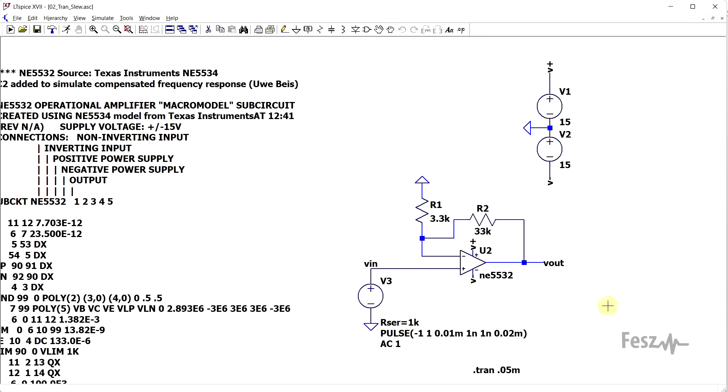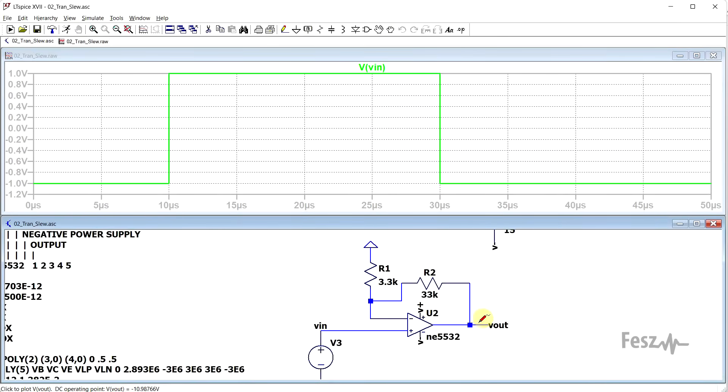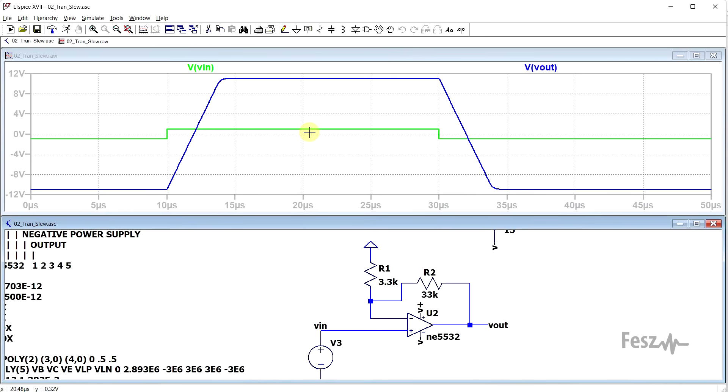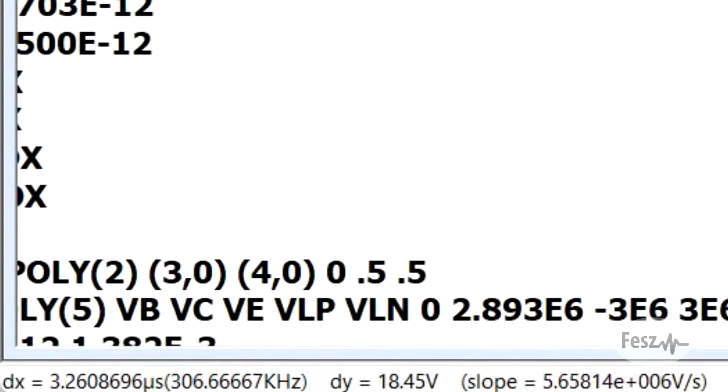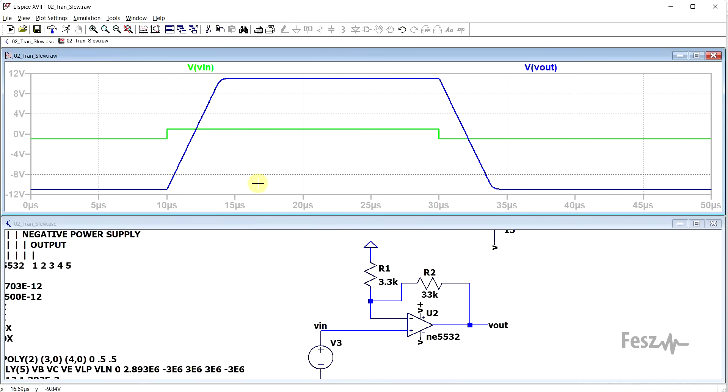Anyway, moving forward with the slew rate test, we can apply a square wave on the input and observe the output. So, if we run the circuit, plot both the input and the output, we see the expected trapezoid wave. And if we check the slope, so just by going over it and looking in the bottom left corner, we can see that we are getting somewhere around 6V per microsecond. Again, not the datasheet value.